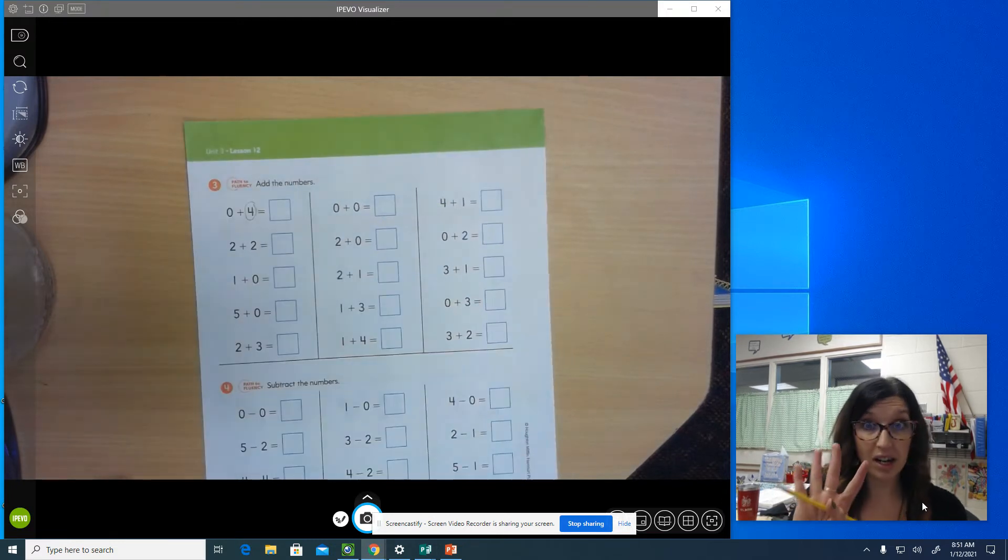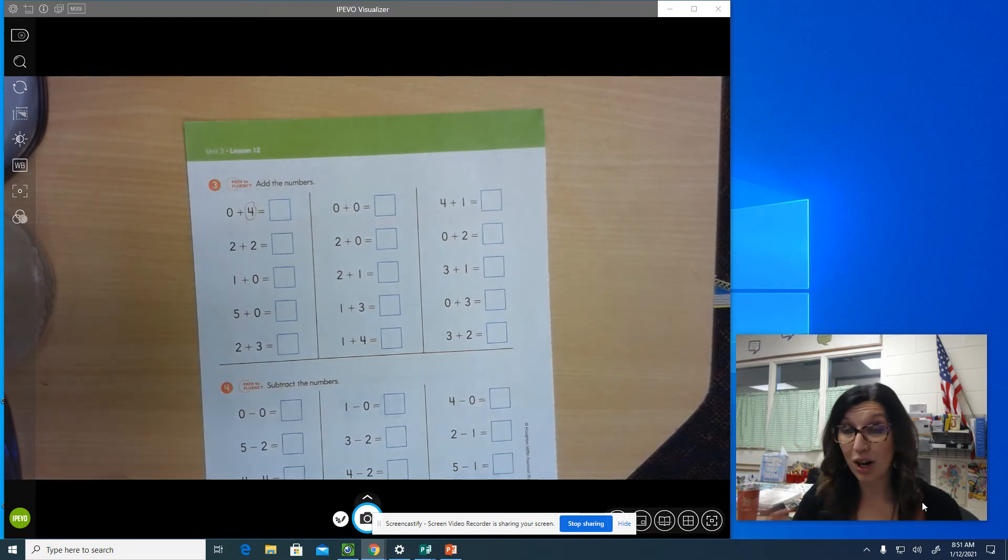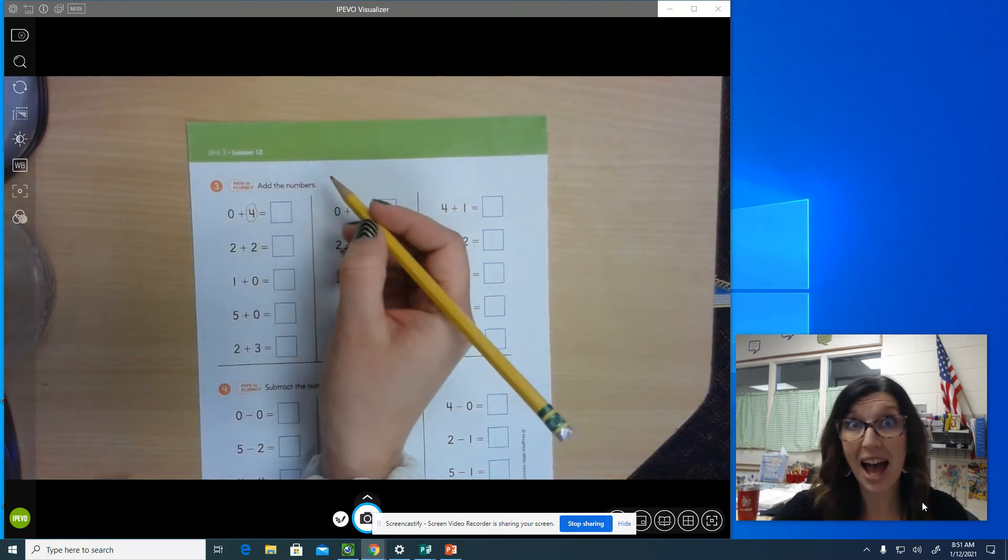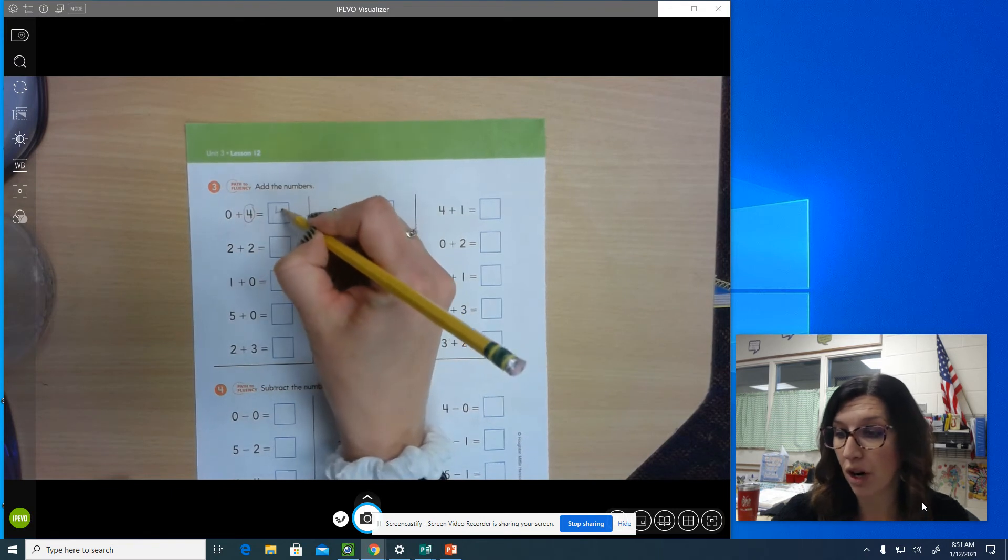So if I have four and I don't add any more, how many do I have all together? Four. I have four so I'm going to put a four in the box.